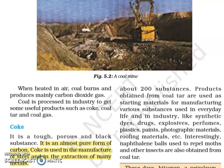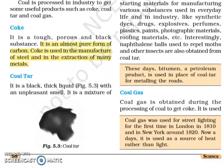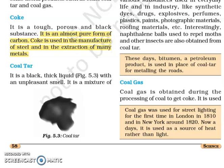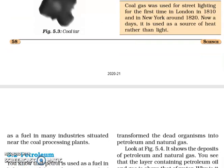Interestingly, naphthalene balls used to repel moths and other insects are also obtained from coal tar. These days, bitumen — a petroleum product — is used in place of coal tar for making roads. Next is coal gas, which is obtained during the processing of coal to get coke. It is used as a fuel in many industries situated near the coal processing plant. Coal gas was used for street lighting for the first time in London in 1810 and in New York around 1820. Nowadays, it is used as a source of heat rather than light.